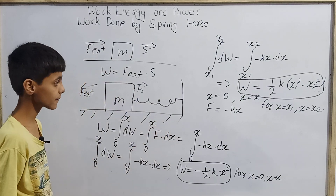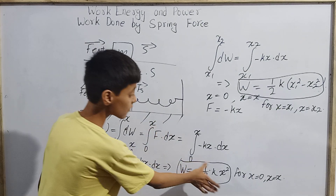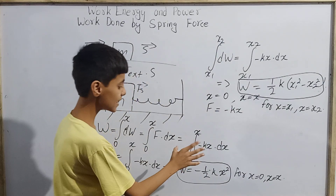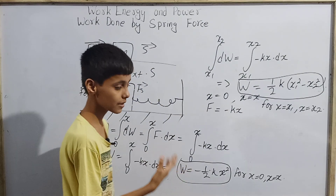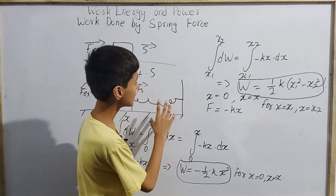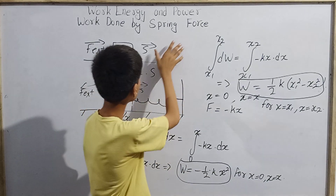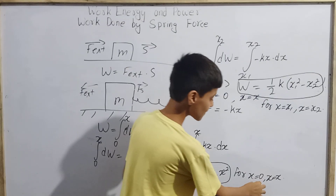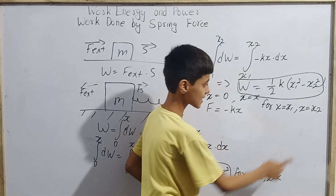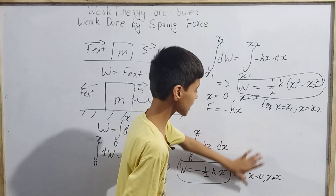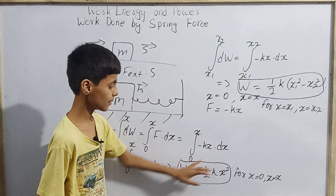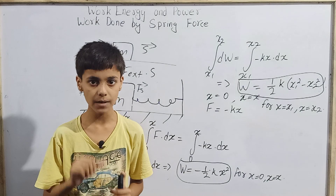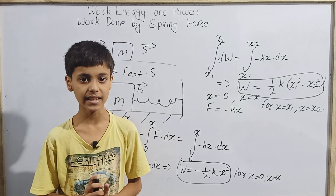Those are the two equations for work done by a spring force for two different cases. When x goes from 0 to x: W = -½kx². When x goes from x1 to x2: W = ½k(x1² - x2²). While solving numericals, make sure which case applies before using the equation. That was today's topic — please subscribe to this channel. Thank you.